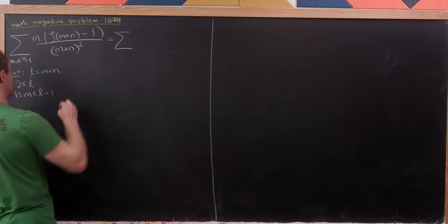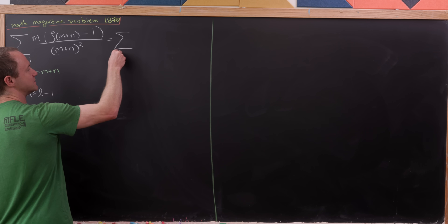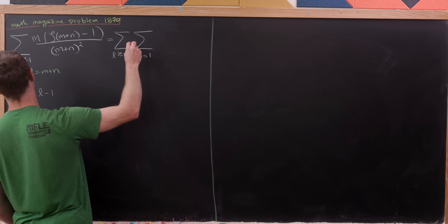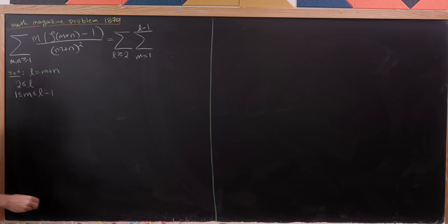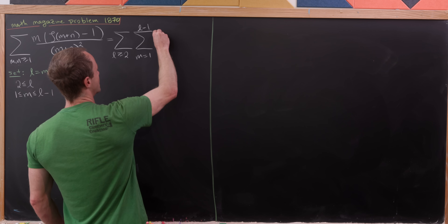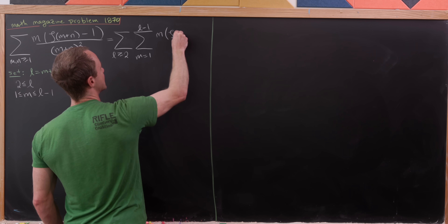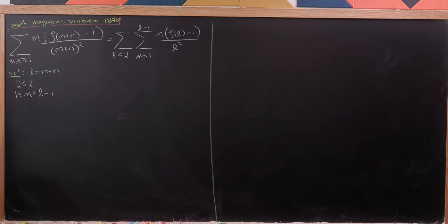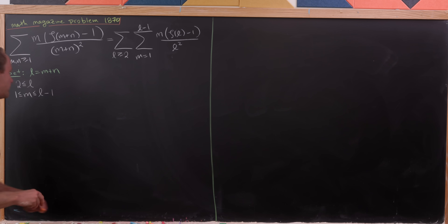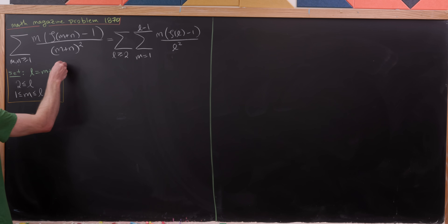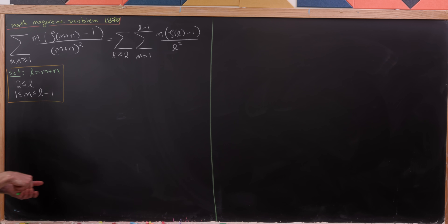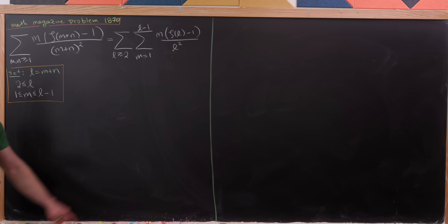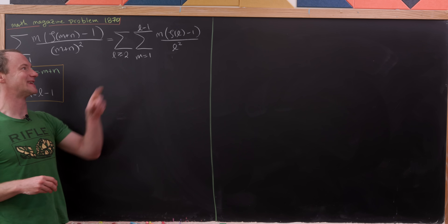So now we rewrite this as the sum with l bigger than or equal to 2, and then m goes from 1 up to l minus 1. We'll have m times zeta of l minus 1 all over l squared. Now let's observe that zeta of l minus 1 over l squared is a constant with respect to the inner sum.